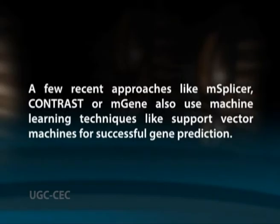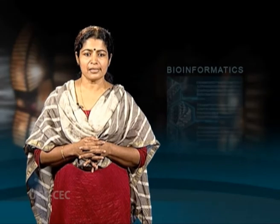The SNAP gene finder is HMM-based like GeneScan and attempts to be more adaptable to different organisms, addressing problems related to using a gene finder on a genomic sequence that it was not trained against. A few recent approaches like M-Splicer, CONTRAST or M-Gene also use machine learning techniques like support vector machines for successful gene prediction. They build a discriminative model using hidden Markov support vector machines or conditional random fields to learn an accurate gene prediction scoring function.